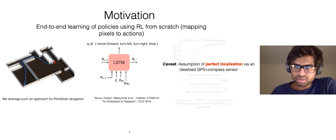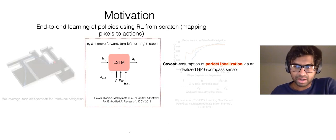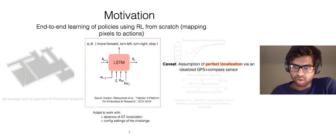However, an important caveat to note here is that this approach assumes perfect localization via an idealized GPS and compass sensor, which we know is impractical to realize in indoor environments in the real world. Therefore, for the point-nav track of the Habitat Challenge this year, we propose to leverage such an architecture and training paradigm and adapt it to work in the absence of ground truth localization input from the environment and under the configuration settings of the challenge.